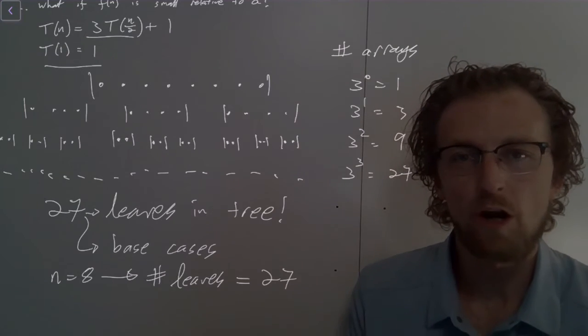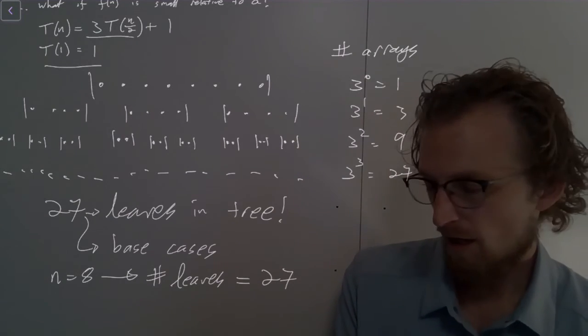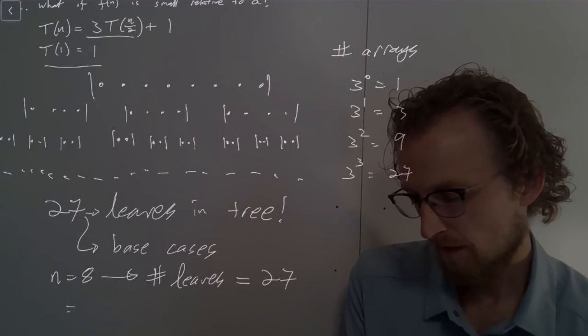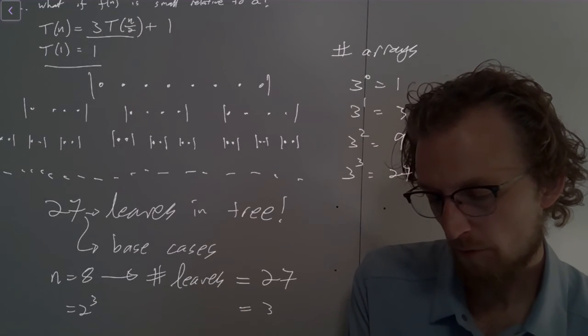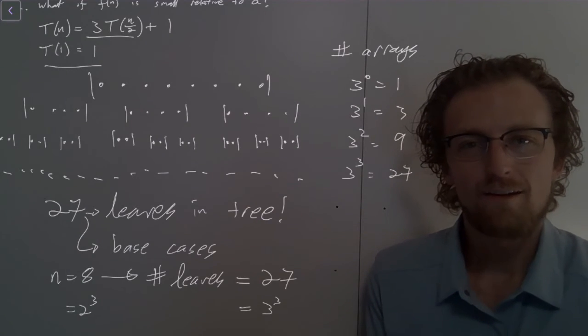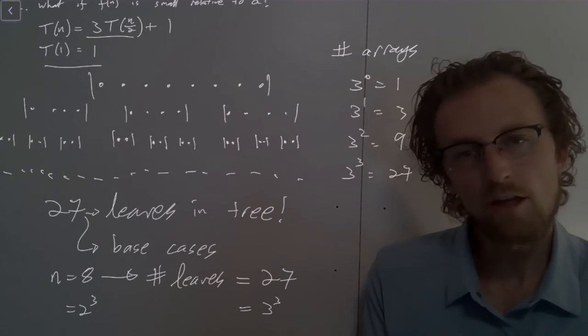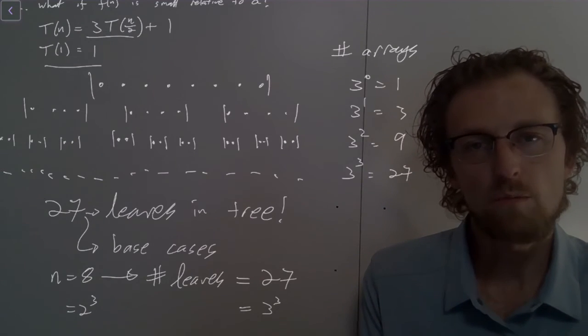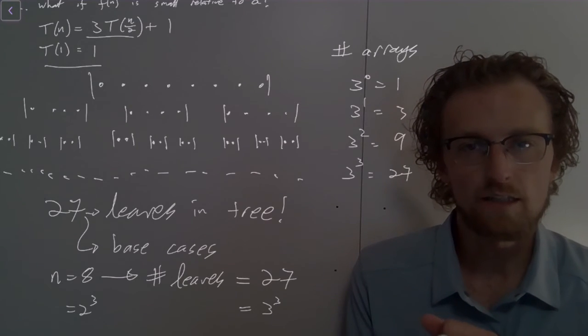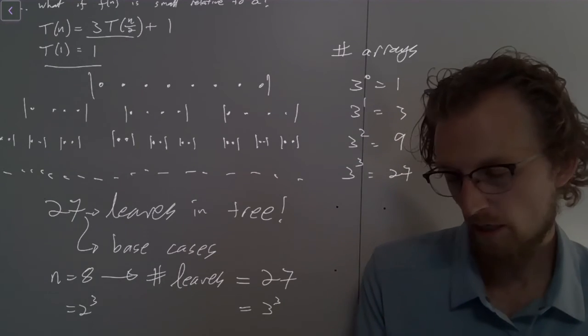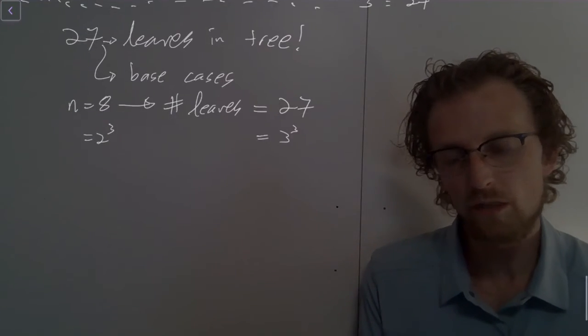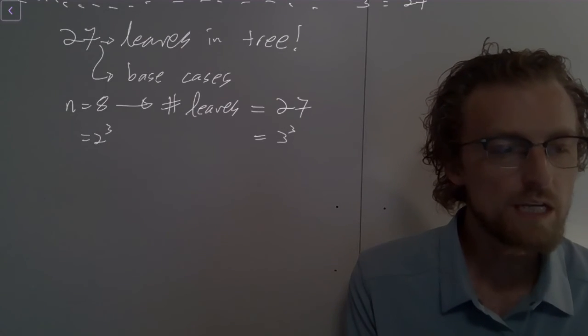then what we get is the number of leaves is 27. And so those two numbers aren't obviously related initially. But you notice 8 is 2 to the 3 and 27 is 3 to the 3. So if I have 2 to the k, if n is 2 to the k, then the number of leaves in the recursion tree is going to be 3 to the k. So there's this funny little exponential scaling thing that happens with the number of leaves in the tree.